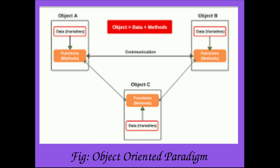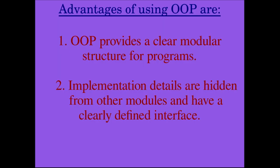An object is nothing but a single unit containing data and methods — data and functions clubbed together. What are the advantages of using object oriented programming? The first advantage is that it has a clear modular structure. Object oriented programming provides a clear modular structure for programs.